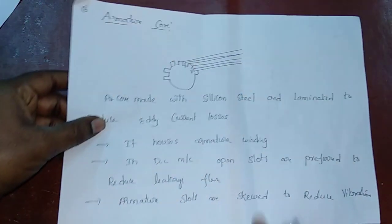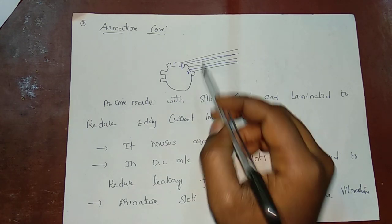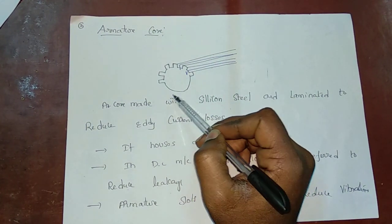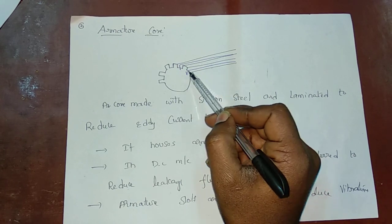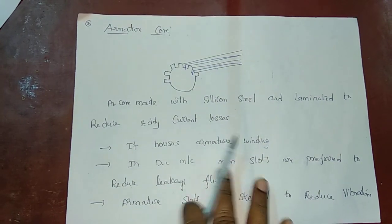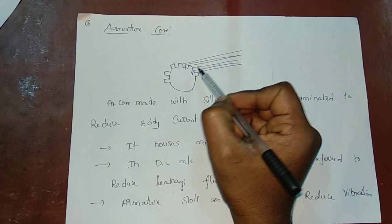Now the armature core. To generate EMF, we need flux from the field poles, and we rotate the armature. The conductors in the armature cut the flux, and EMF is produced. The conductors are placed in slots in the armature core. These slots are distributed in 360 degrees. The armature core is made of silicon steel with lamination so that eddy currents are reduced.